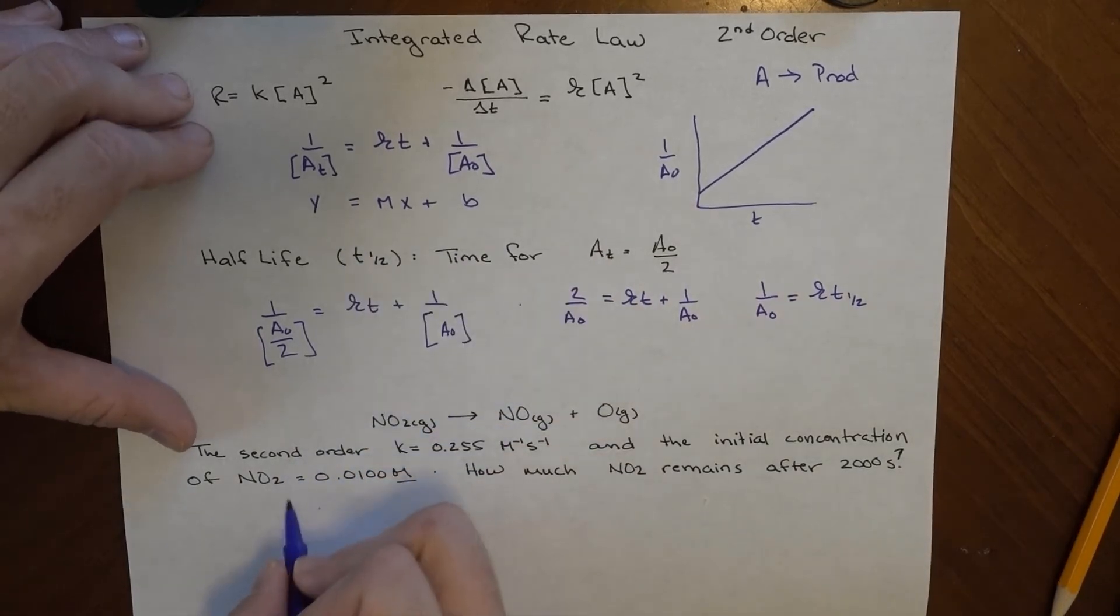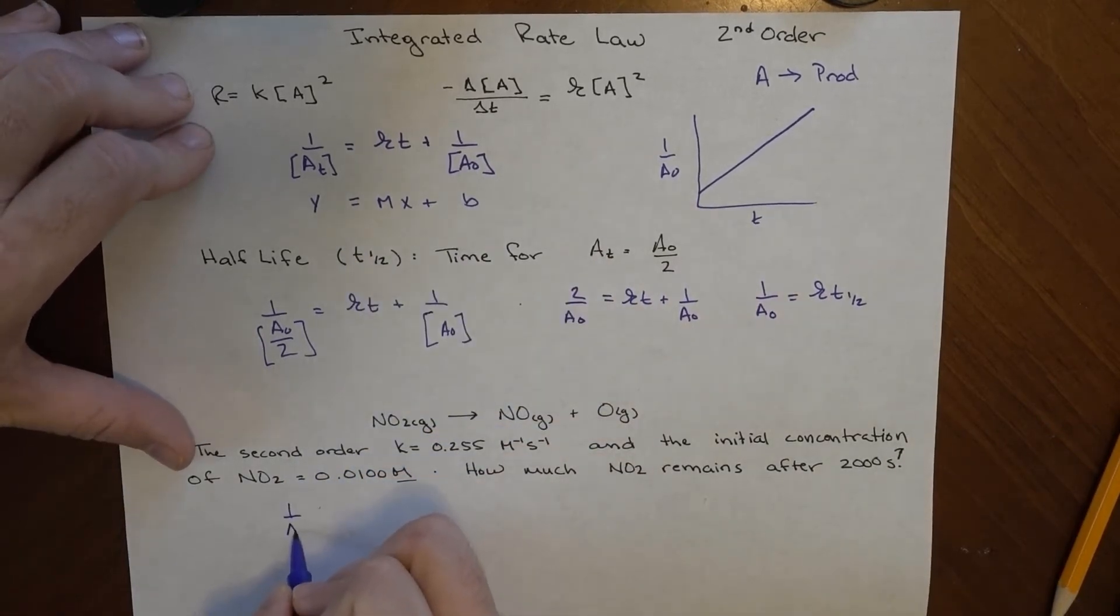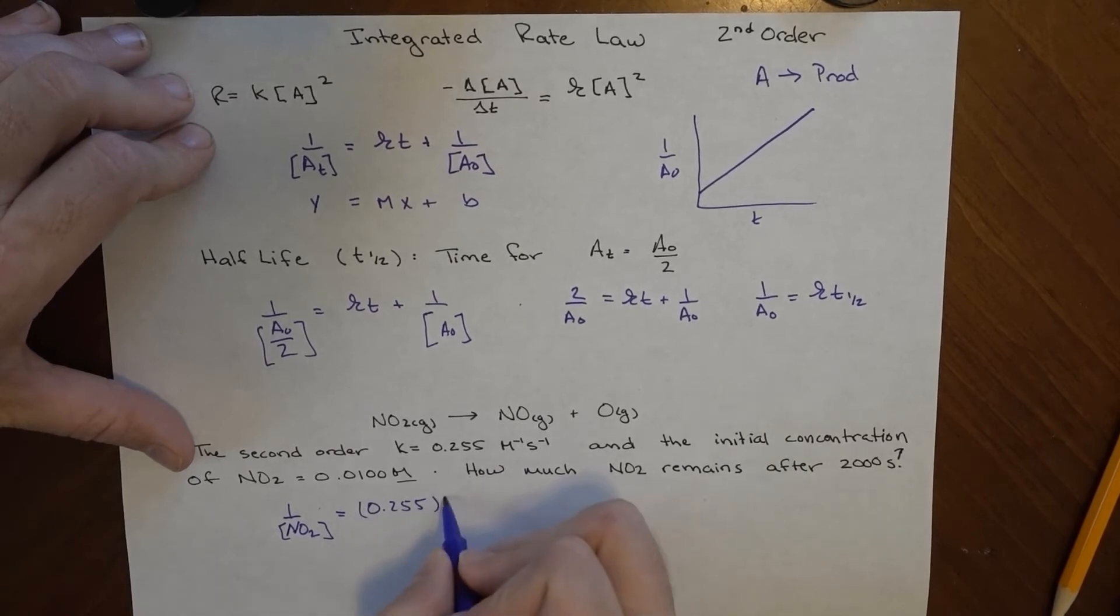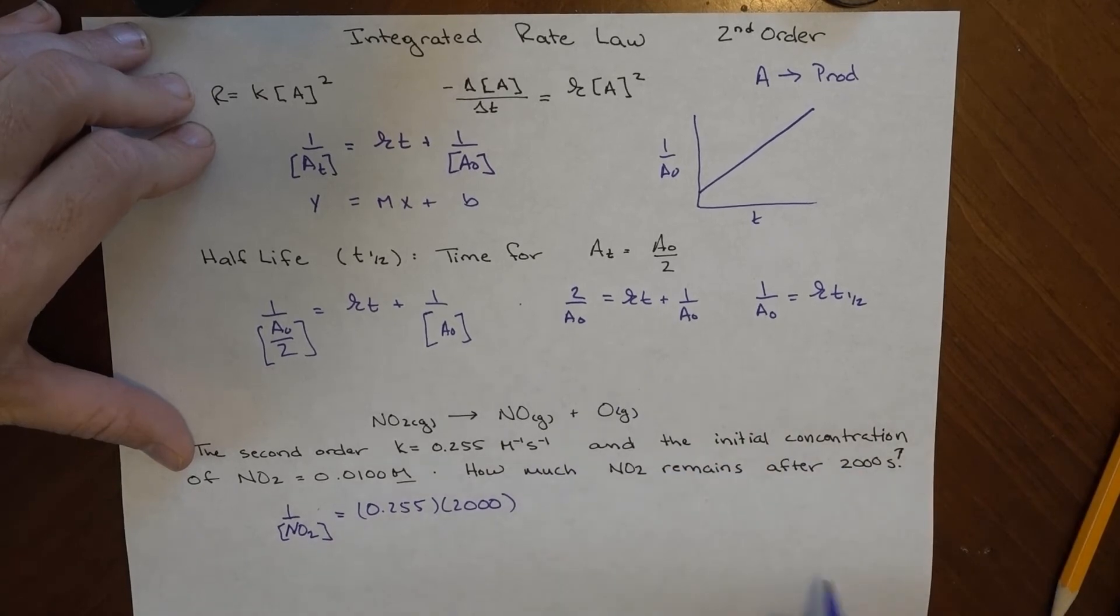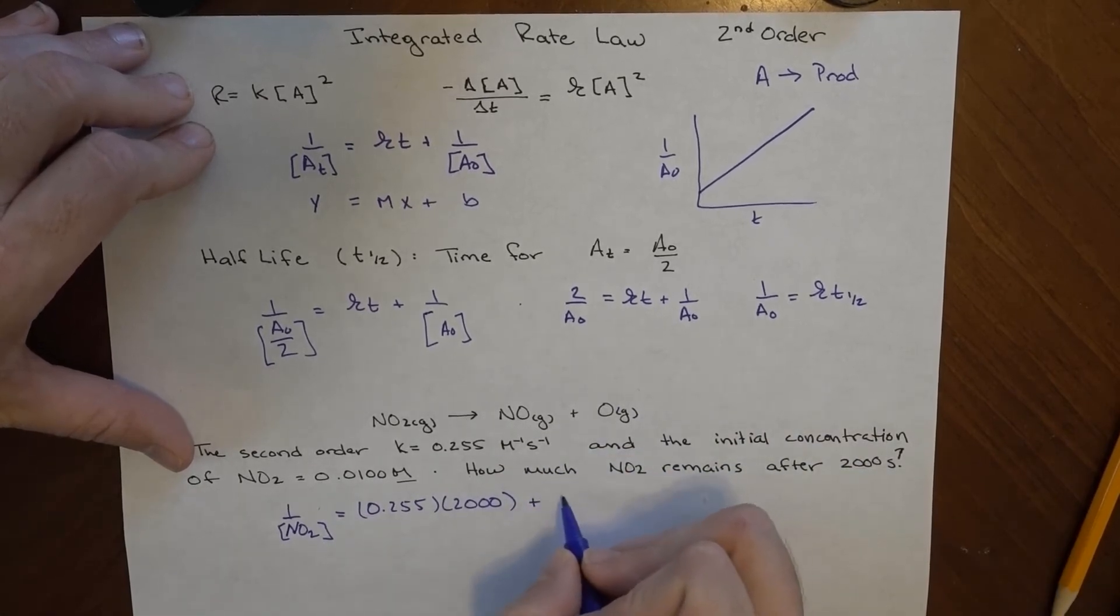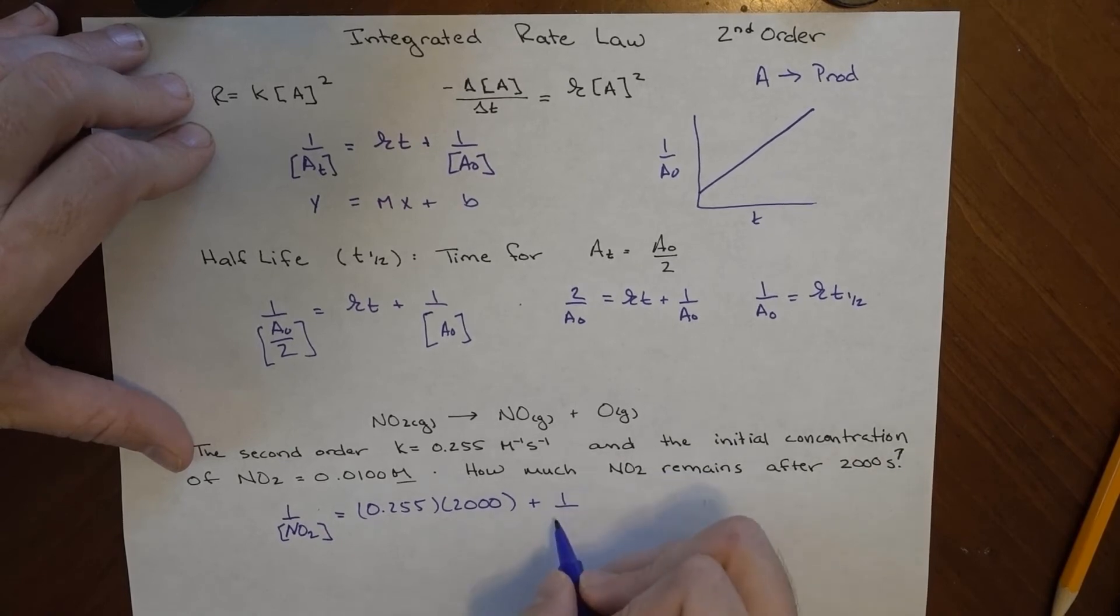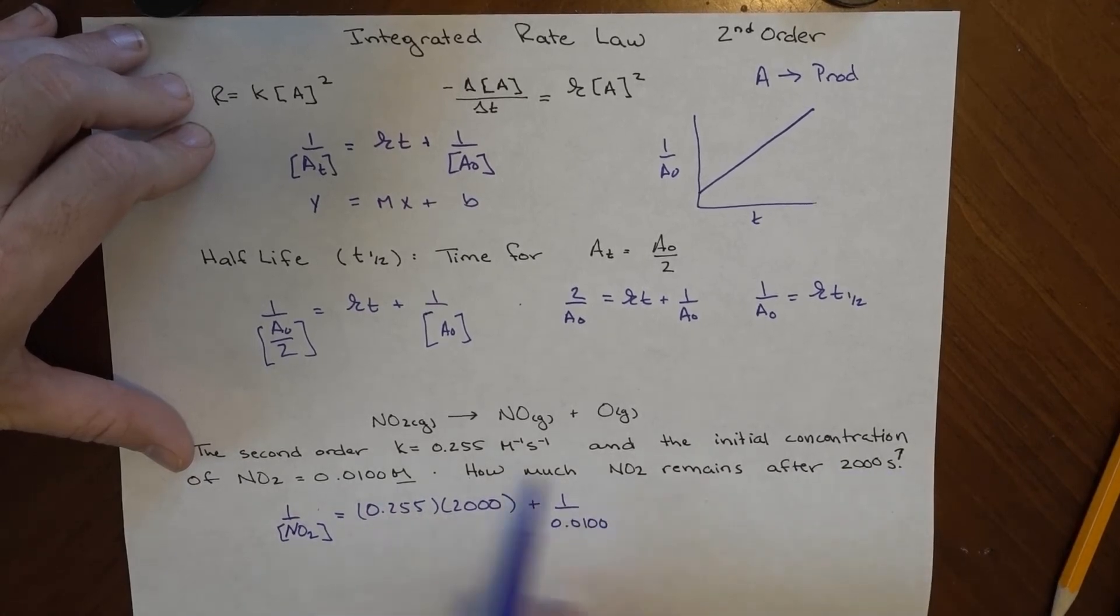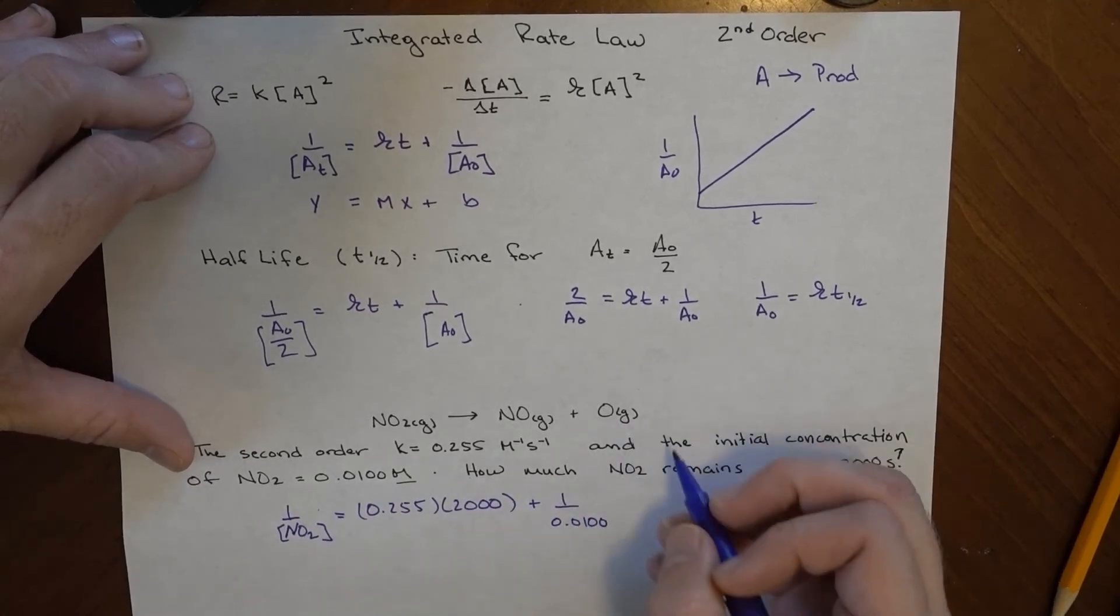Let's just plug into the equation. I don't know [NO₂] at time t, but what I do know is 0.255 times 2,000 seconds—seconds cancel—and then I'm going to add that to the initial concentration 0.0100. The nice thing is this side of the expression is all numbers, so I just have to evaluate it.